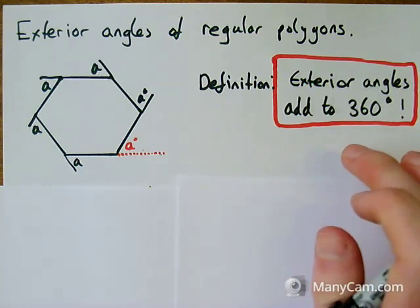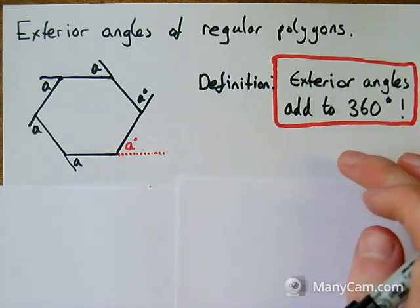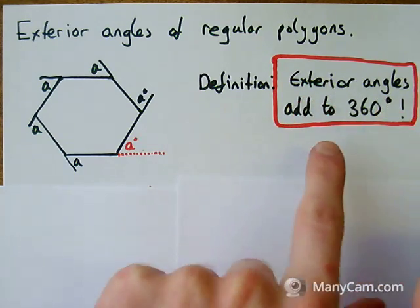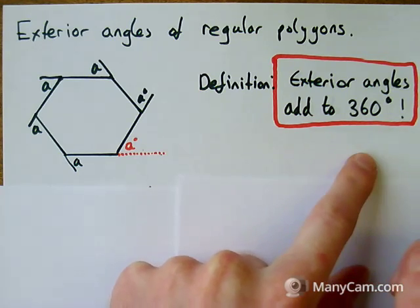I've written here in a big red box, because it's important for what we're going to need to know to have a go at some example questions, that exterior angles add to 360 degrees.